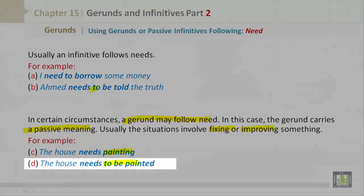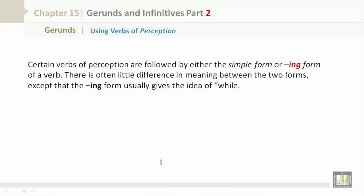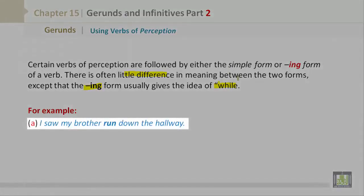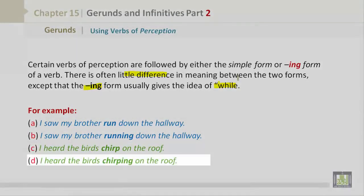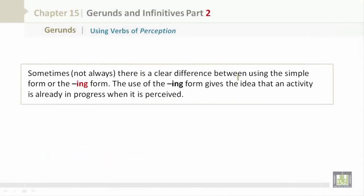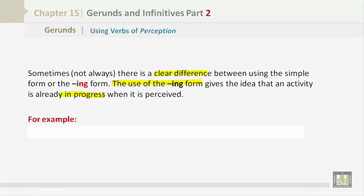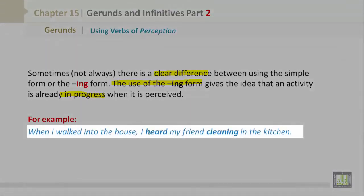'The house needs to be painted.' Verbs of perception: certain verbs of perception are followed by either the simple form or -ing form of a verb. There is often little difference in meaning, except that the -ing form usually gives the idea of 'while.' Examples: 'I saw my brother run down the hallway.' 'I saw my brother running down the hallway.' 'I heard the birds chirp on the roof.' 'I heard the birds chirping on the roof.' The -ing form gives the idea that an activity is already in progress when perceived. Example: 'When I walked into the house, I heard my friend cleaning in the kitchen.' 'I heard a famous imam speak at the mosque last Friday.'